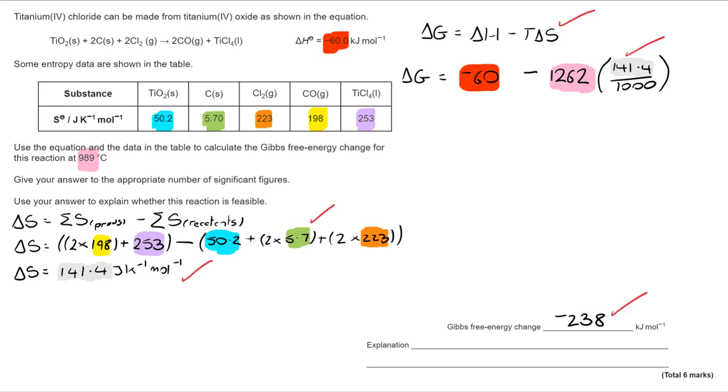You can see that there are five marks available for the calculation. One for doing the entropy calculation, one for calculating the entropy, one for the delta G expression, one for the working out, and one for the final answer. You would get full marks if you got to the final answer, but showing the working out is always recommended.